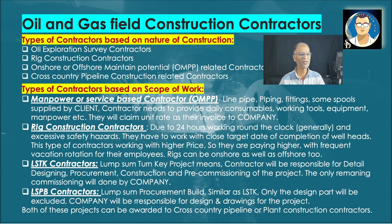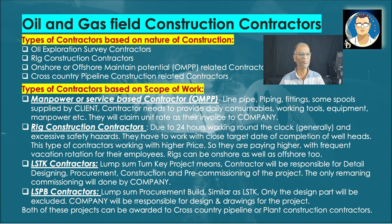LSTK — Lump Sum Turnkey — contractors handle design, procurement, construction, and pre-commissioning, handing over a project ready to run. This can apply to pipeline contractors or plant facility contractors. Nowadays, companies often do design in-house and give only procurement and construction to the main contractor — this type is termed LSPB (Lump Sum Procurement Build), where the company is responsible for design and drawings. Both LSTK and LSPB can be awarded to cross-country pipeline contractors or plant facility building contractors.